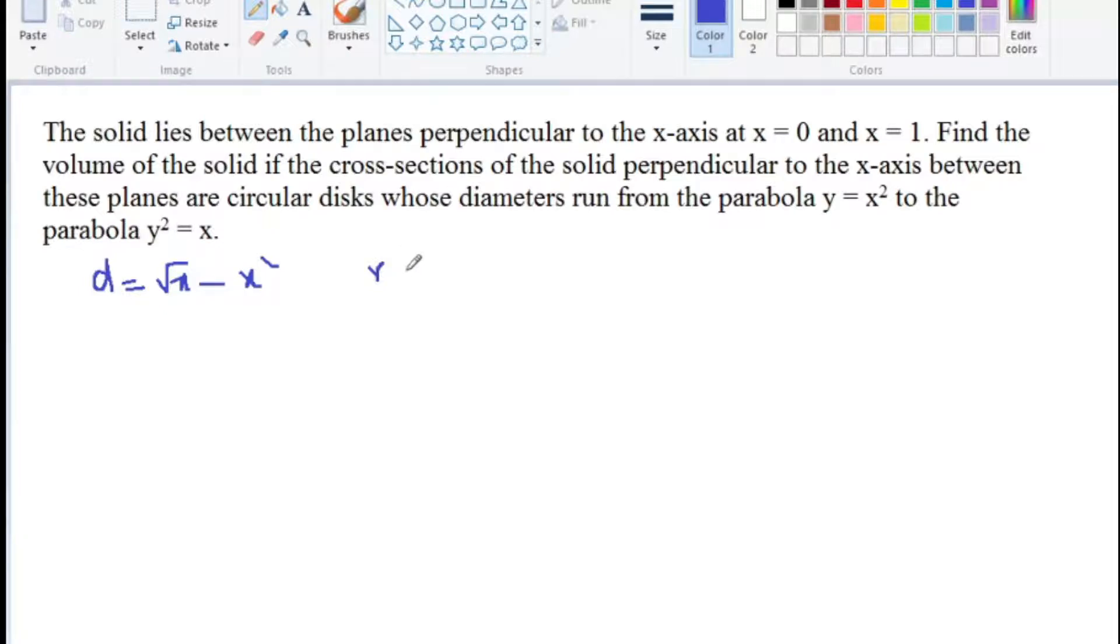Radius equal to root x minus x square divided by 2. Volume: integral 0 to 1, pi into root x minus x square by 2 whole square dx equal to pi by 4.